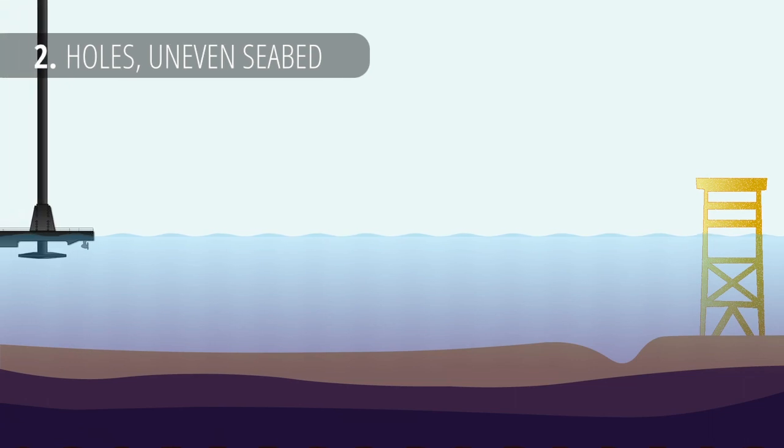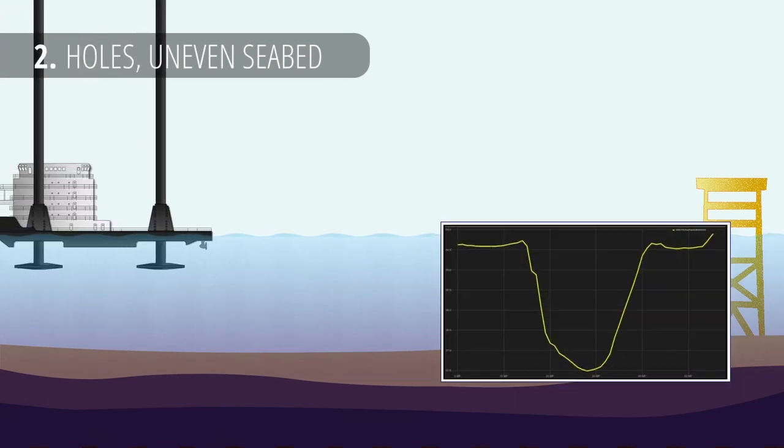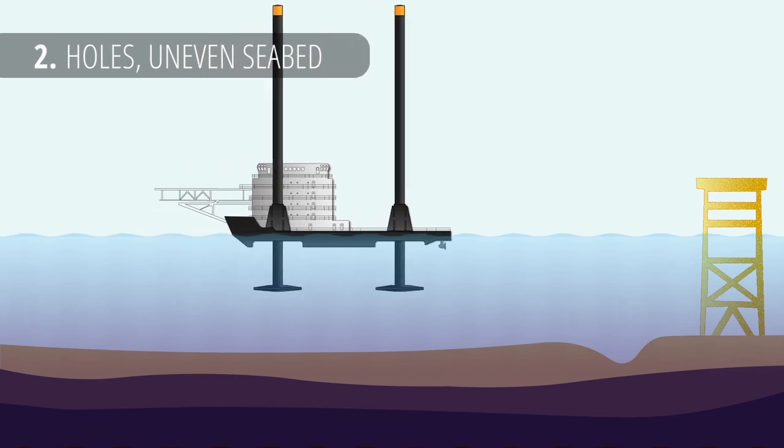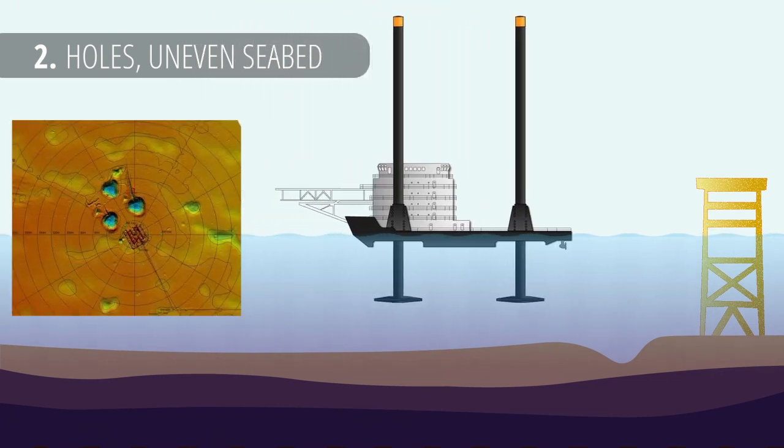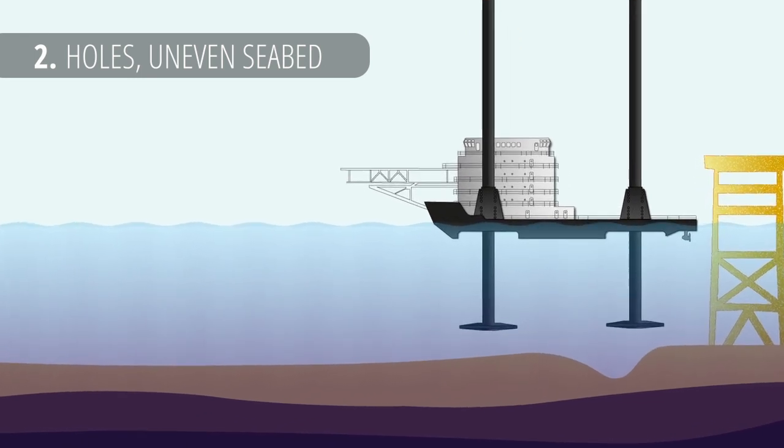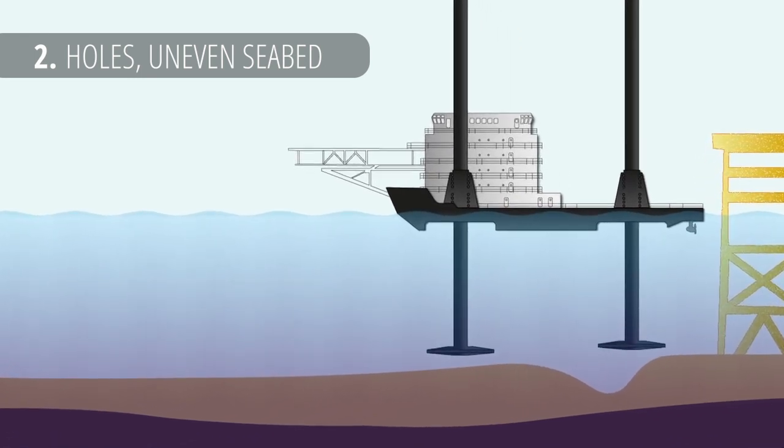Other hazards on seabed surface are steep holes and uneven topography. Most often those will be old spud can holes made by other rigs. Observe how the leg is placed partly over such hole in the ground and we'll see potential consequences of such placement.